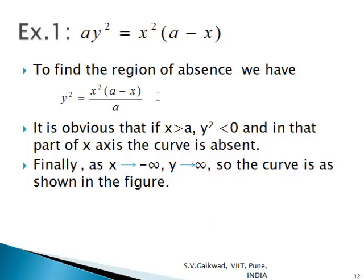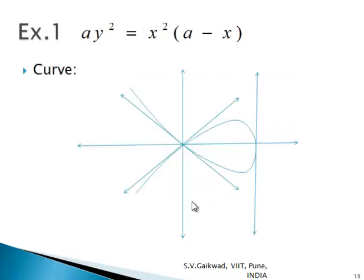For the region of absence: y² = x²(a − x)/a. Since x² and a are always positive, the sign of y² depends on (a − x), which is negative for x > a. So for x > a, y² < 0 and the curve is absent. As x → −∞, y → ∞. The graph shows the curve with y = ±x as tangents at the origin, tangent x = a at (a, 0), and the curve extending to infinity on the left.